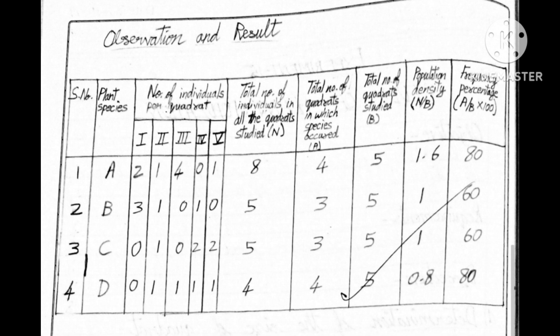Then next one, the total quadrants in which the species occurred. It occurred in first quadrant, second quadrant, third quadrant and fifth. Nothing was observed in fourth. That is why it was observed only in 4 quadrants. Total number of quadrants we studied overall 5 quadrants. For all species we study 5 quadrants. Among 5, only 4 had the A species occurred.